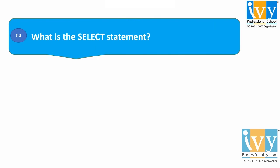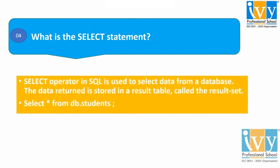Moving to the fourth question: what is the SELECT statement? The SELECT operator in SQL is used to select data from a database — that is, it is used to retrieve or fetch data from a database. The data returned is stored in a result table called the result set. With the SELECT clause, we can specify the columns we want to be displayed in the query result. The syntax of the SELECT statement is: SELECT * FROM db.student, where db.student is a database.